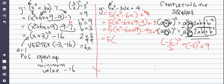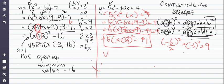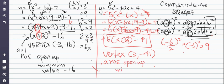Now I can factor this. 5(x² - 6x + 9) factors to 5(x - 3)². Here the sign is negative, which is why this one is negative. Then -45 + 4 = -41. So I'm now in vertex form: 5(x - 3)² - 41. The vertex is (3, -41). A is positive, which means it's opening up, so I have a minimum value of -41. And that's how you do it — hope that helps!